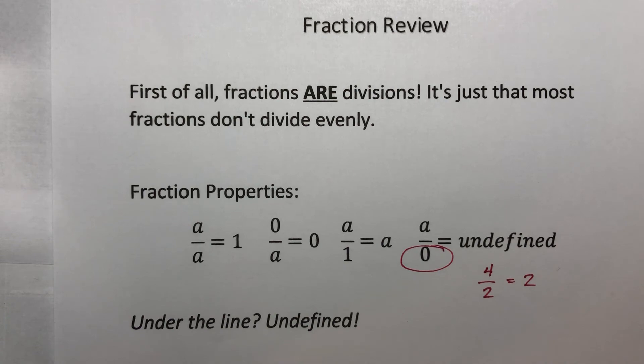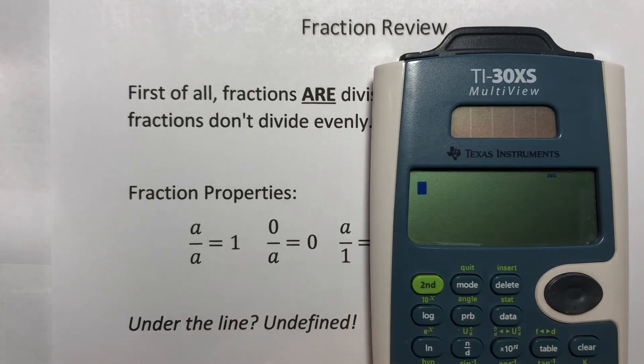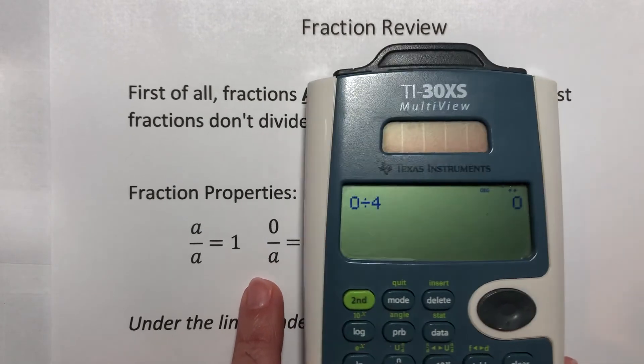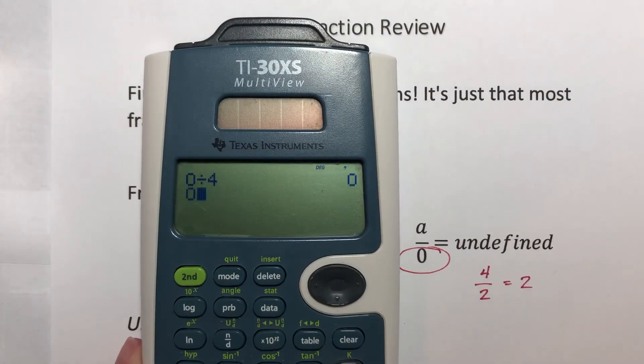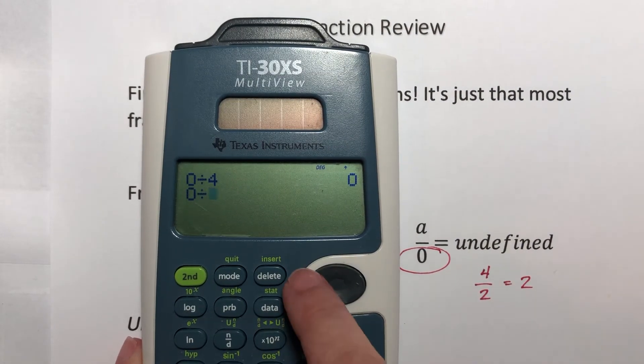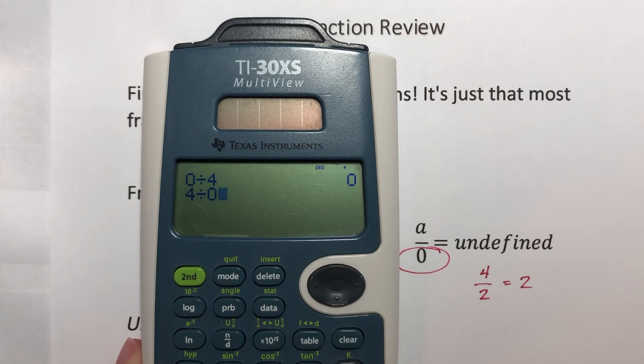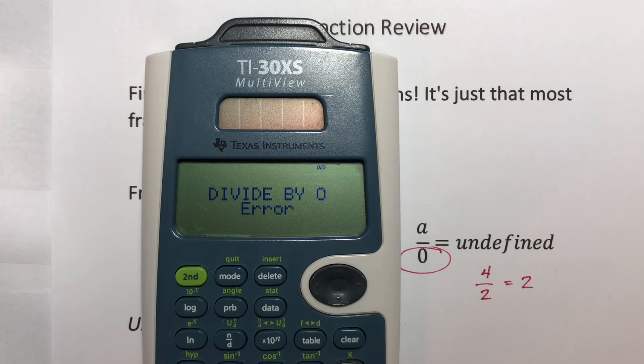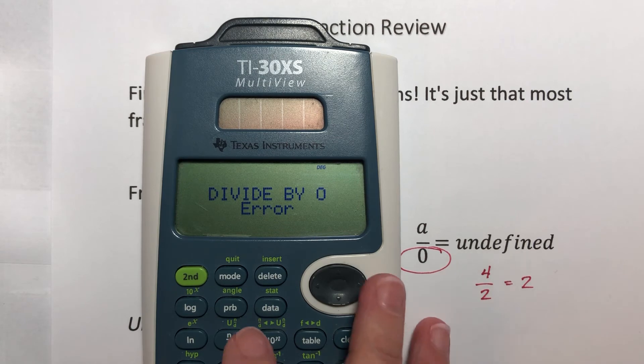If you remember that there could be a problem but you can't remember which is which, you are allowed a calculator in this class. If you enter zero divided by any number, let's use four, it tells you it's zero. But if I reverse that and do four divided by zero, it tells me divide by zero error. All your calculators are going to give you some kind of error. Your calculator can help you remember which way is which, but only if you remember to check your calculator.